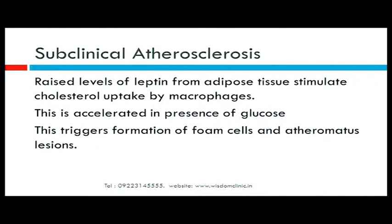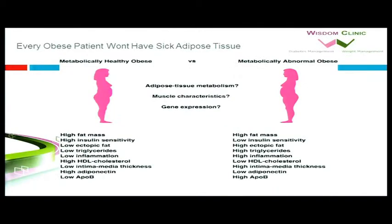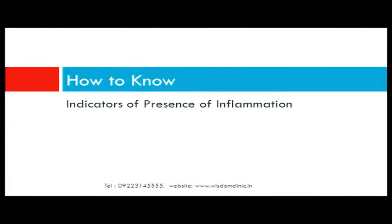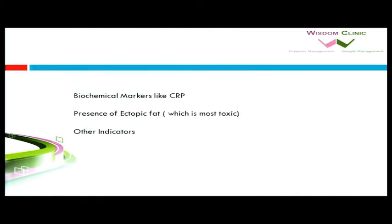There is an entity called subclinical atherosclerosis: raised leptin levels from adipose tissue stimulate cholesterol uptake by macrophages, accelerated in the presence of glucose, triggering foam cell formation and atheromatous lesions. However, not every obese patient has sick adipose tissue — that is the genetic difference. There is an entity called metabolically healthy obesity, and US data shows around 37.6% of obese people are metabolically healthy, without inflammatory changes. Indicators of inflammation include biochemical markers like CRP and the presence of ectopic fat.